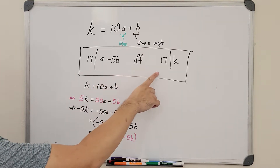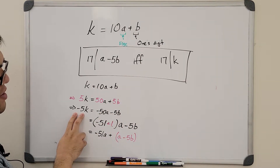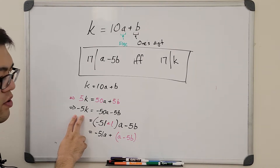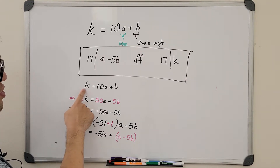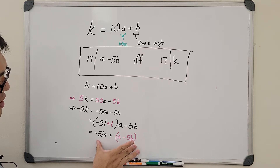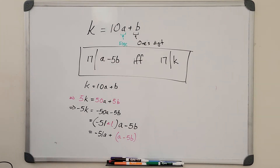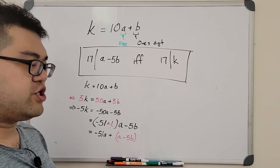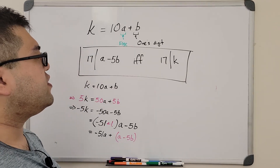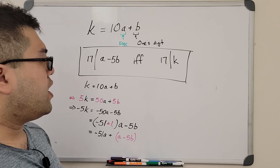One subtle but important point: we're multiplying by −5 (or positive 5), and the fact that 5 is not a multiple of 17 is crucial. Since 17 is prime, for the product to be a multiple of 17, at least one factor must be a multiple of 17. That's how both tricks are justified. Hopefully you enjoyed this video — if so, please like, subscribe to my channel, and turn on the notification bell so you won't miss any new videos!